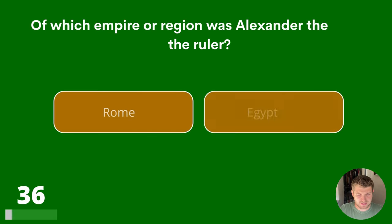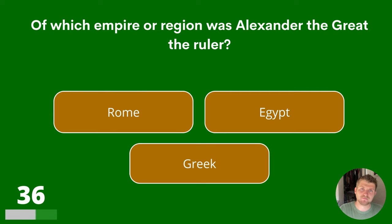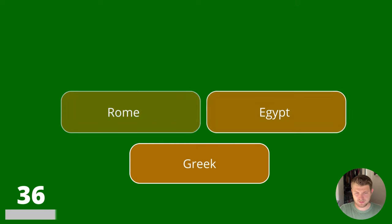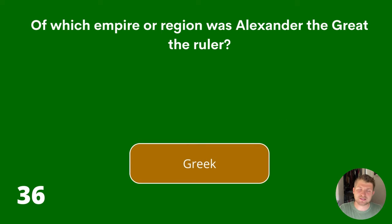Question 36. Of which empire or region was Alexander the Great the ruler? Rome, Egypt or Greek? The answer is Greek.